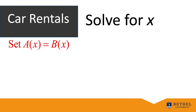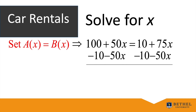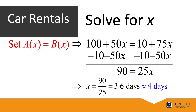Now use algebra to solve for x: set A(x) equal to B(x), giving 100 + 50x = 10 + 75x. Subtract 50x from both sides and subtract 10 from both sides — whatever is done to one side must be done to the other. This gives 90 = 25x. Dividing both sides by 25 gives x = 90/25 = 3.6 days, which we round up to 4 days.